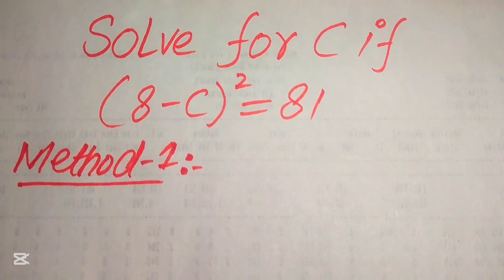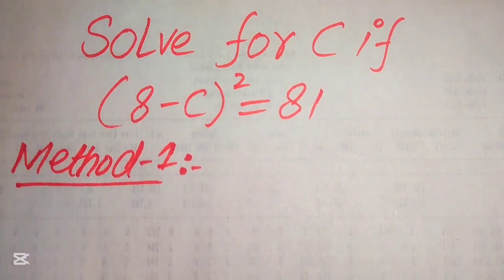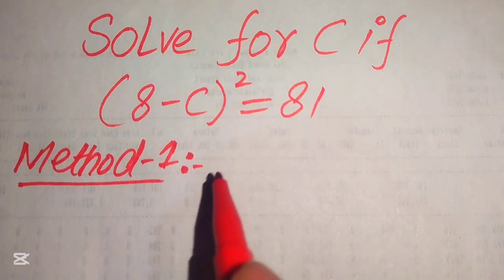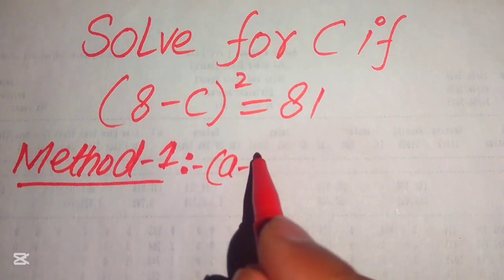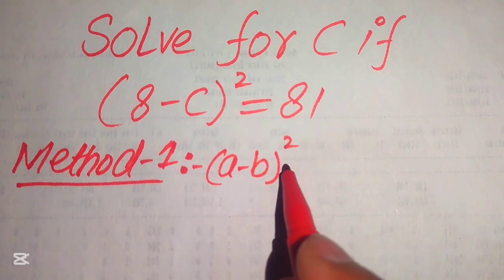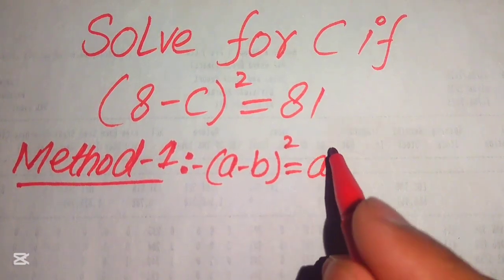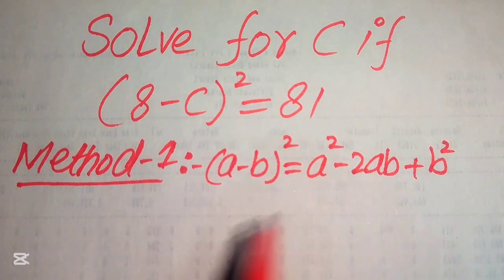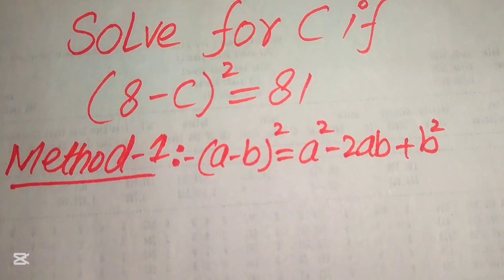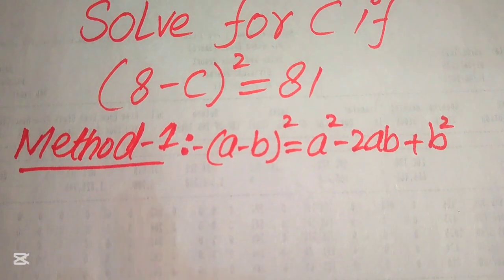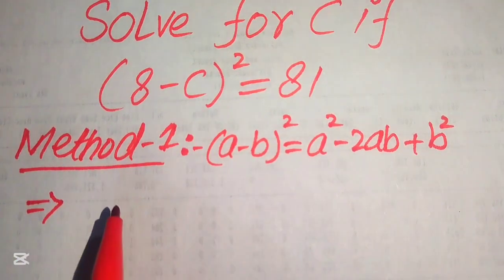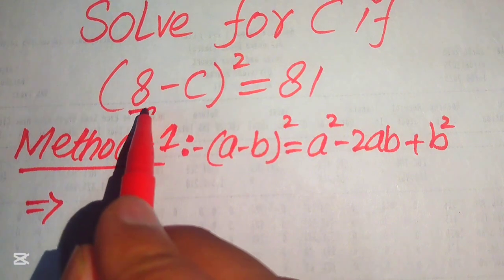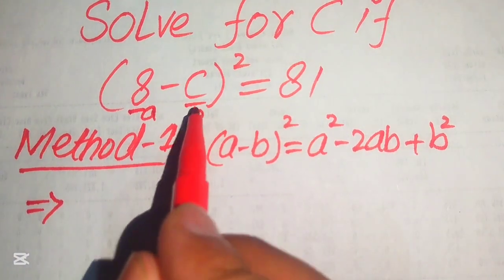In the first method, we solve this problem with the help of this algebraic formula: (A minus B) whole square equals A squared minus 2AB plus B squared. According to this formula, we can write the left-hand side of the equation in this expanded form, because here our A is 8 and our B is C.